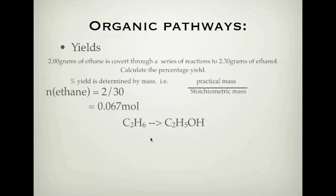So therefore, I can do stoichiometry and think about that if I have one of these, I'm producing one of these. So therefore my number of moles of ethane is going to be equal to my number of moles of ethanol, which is also going to be 0.067.